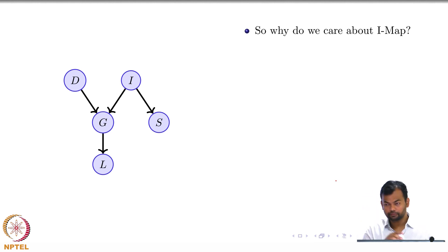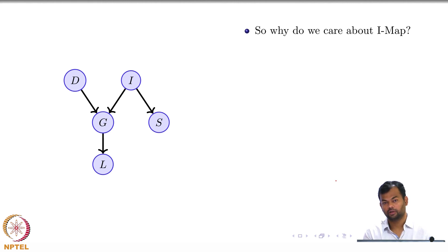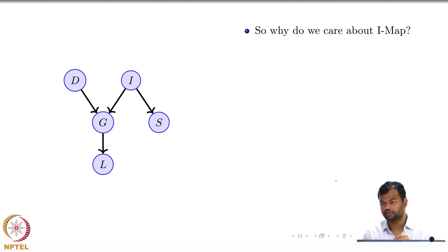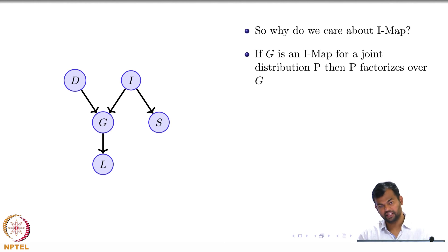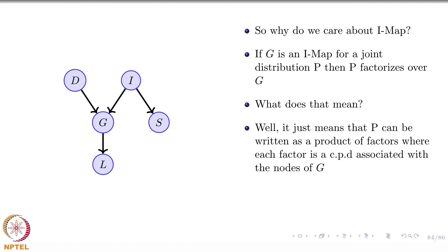Why do we care about IMAPs? If someone gives you an IMAP for a complex distribution, that means they gave you a graph such that the independences encoded in the graph are a subset of the independences in the distribution. This ensures that P factorizes over G — meaning P can be expressed as a product of all the conditional and marginal probability distributions associated with G. Without any independence assumption you would use the chain rule; with an IMAP, the factorization simplifies.